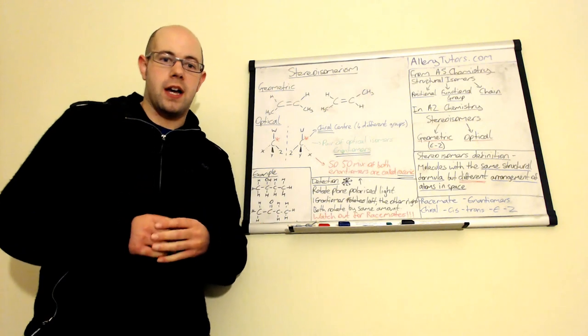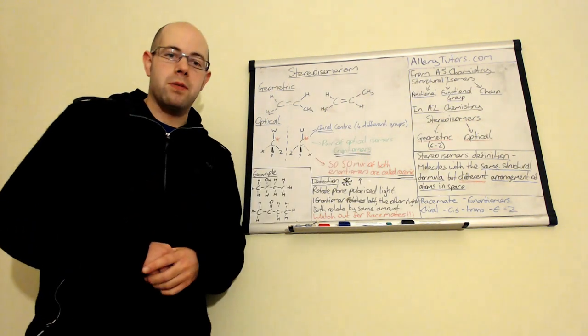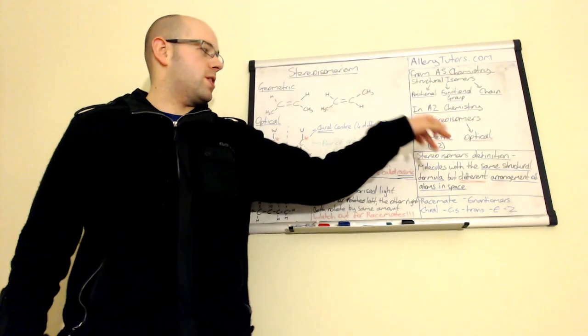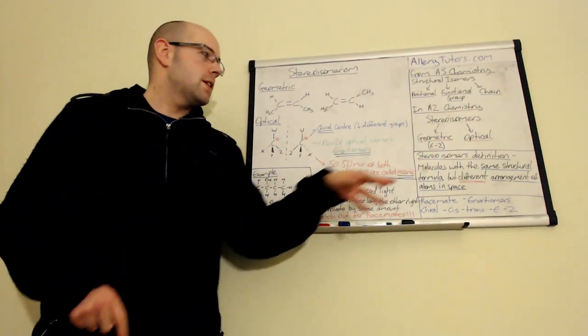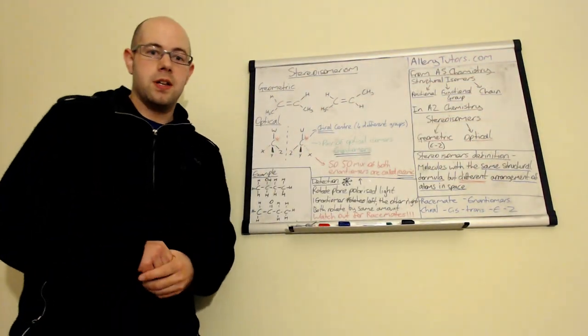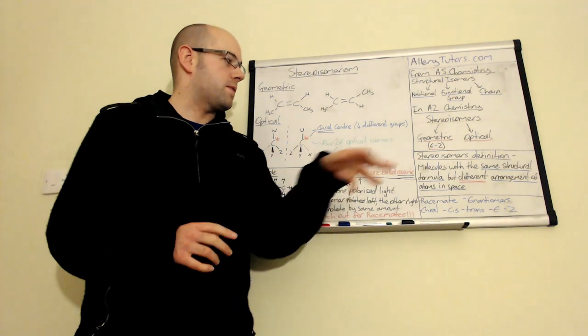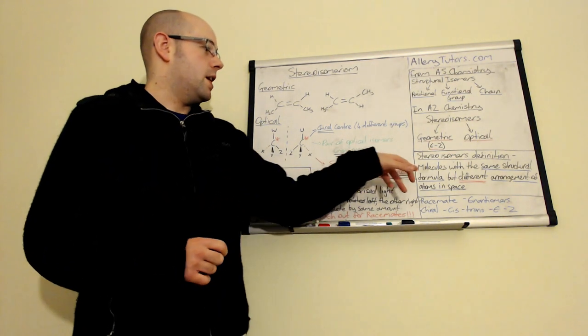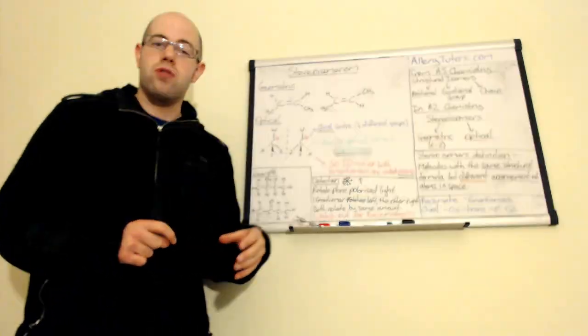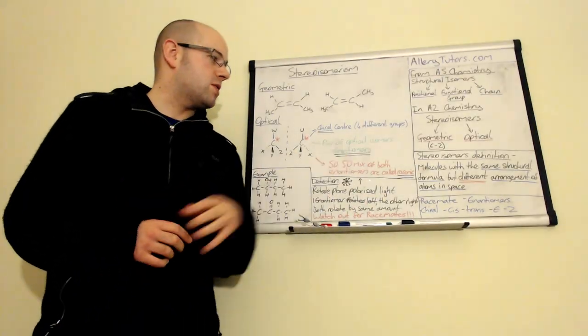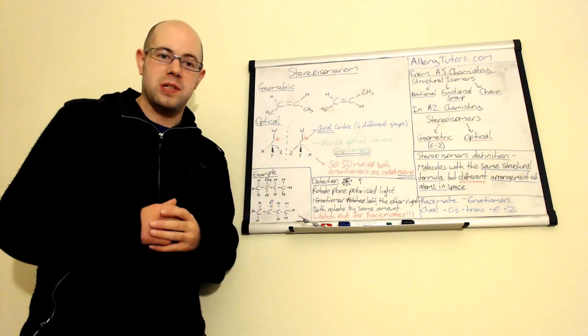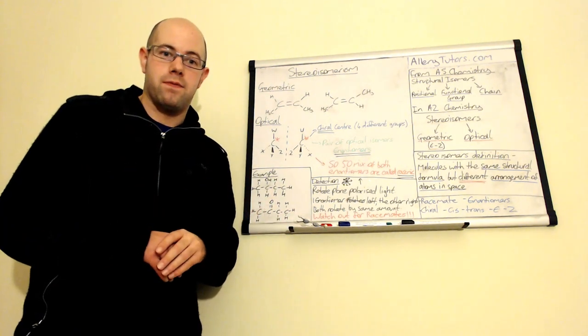But in addition to that at A2 you also need to know about stereoisomers. Now stereoisomers come in two types: geometric or we can sometimes call it E-Z, and optical isomers. Both of these actually have the same definition: a molecule with the same structural formula but a different arrangement of the atoms in space.